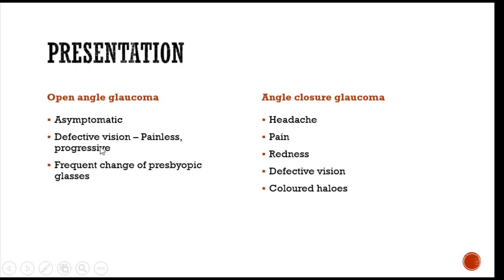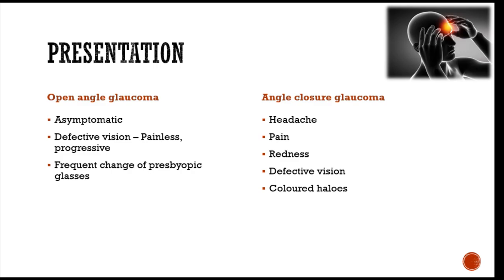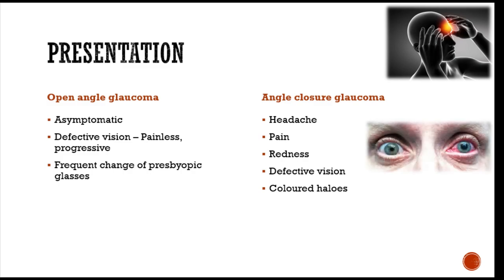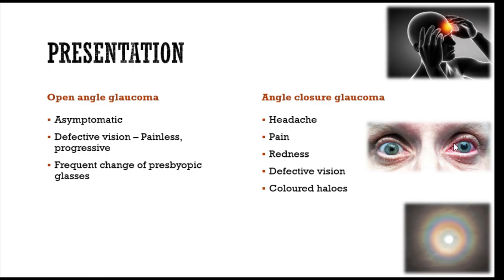The main presentation of open angle glaucoma is a painless, gradual, progressive loss of vision, and most patients are asymptomatic. In angle closure glaucoma, the rate of rise in intraocular pressure is much faster, causing headache and pain, and in acute cases redness with circumcorneal congestion and a slightly dilated pupil. This is also associated with corneal edema, leading to defective vision and coloured halos — the patient sees rainbow-like rings around a light source when there is corneal edema in acute angle closure glaucoma.